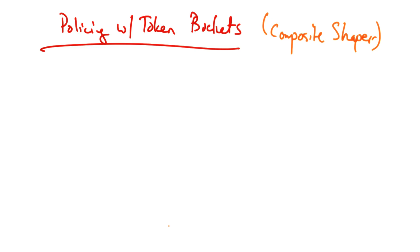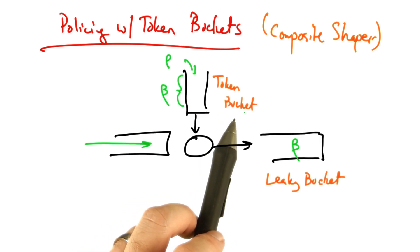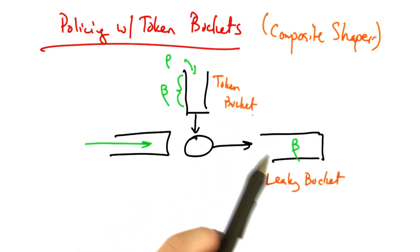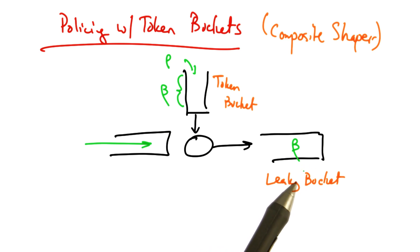To apply policing to token buckets, what's often done is to use what's called a composite shaper, which combines a token bucket shaper with a leaky bucket. The combination of the token bucket shaper with the leaky bucket shaper allows for good policing.